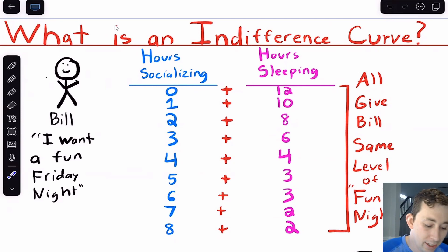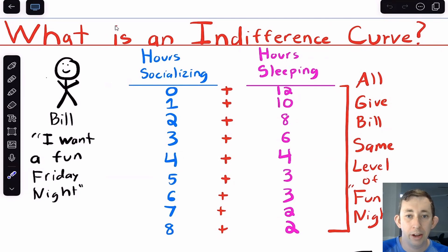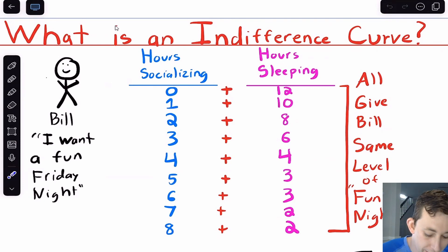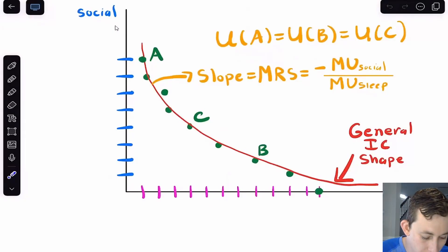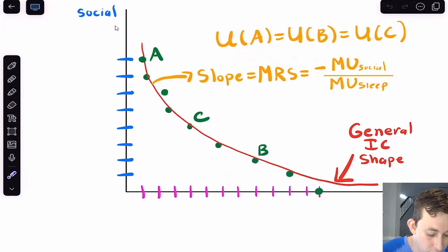So an indifference curve would connect the point (0, 12) all the way down to (8, 2), tracing out all combinations in between that give Bill the same amount of fun. That's what an indifference curve is — it tells Bill all the options he has if he wants the same level of fun on his Friday night. Let's graph this. I've plotted those points from the table and traced a red line showing what a general indifference curve looks like.